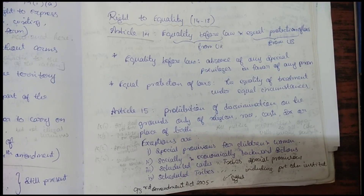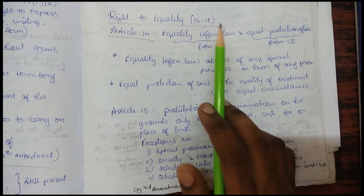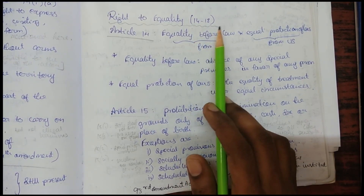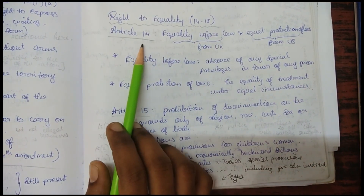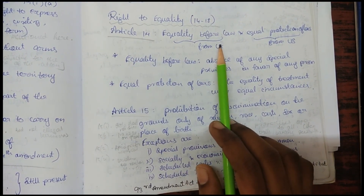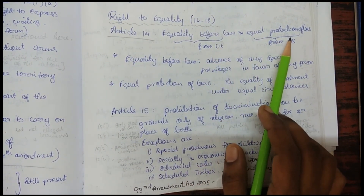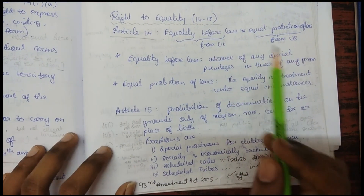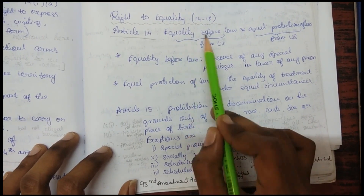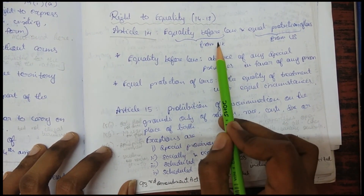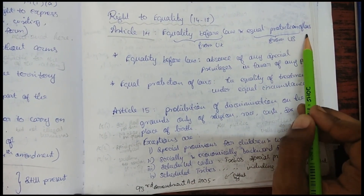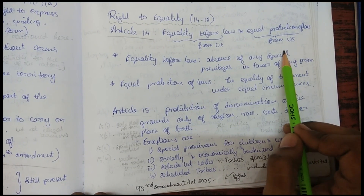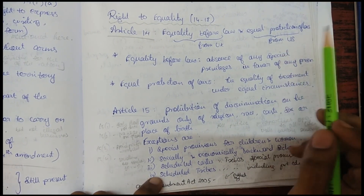Now let us look into the right to equality. Articles 14 to 18 cover the right to equality. Article 14 deals with equality before law and equal protection of laws. The concept of equality before law was taken from the UK, while equal protection of laws was taken from the US constitution.